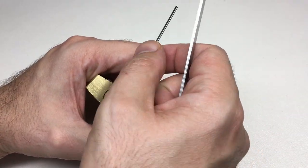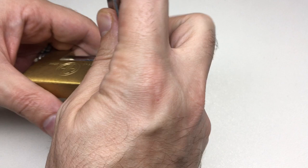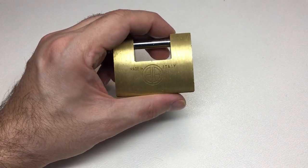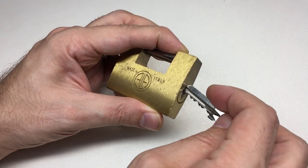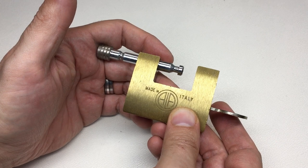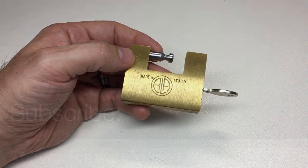So there you go, that's the Ala lock, a little 60mm brass shutter lock padlock. Very cute, but alas, not particularly secure. All right, I'll see you all next time.